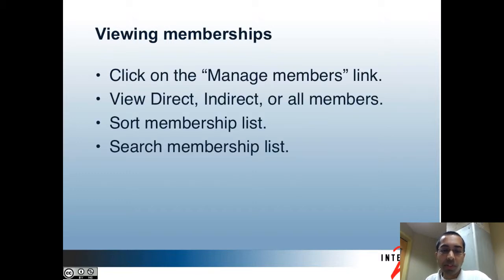In the admin UI, once you select a group and if you have access to the group, you can view the memberships by clicking on the manage members link. You are able to view just the direct members, just the indirect members, or all the effective memberships. You may also have options to sort the membership list based on various attributes, depending on how your Grouper administrator has configured this. You also have an option to search through the membership list, which is useful if the group has a huge number of members and you want to see if a specific member is in the group.